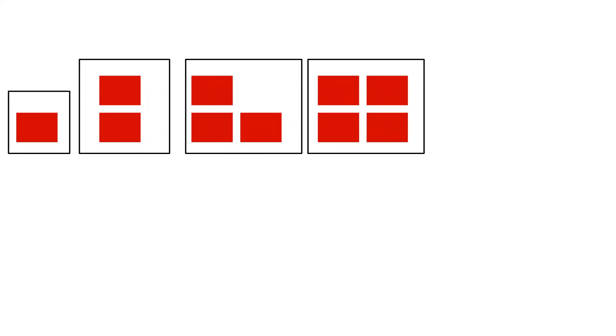So what is happening in this pattern? It is increasing by one. As we move ahead, it is increasing by one rectangle. So can you guess what will be next? Last we had four, so next it will be five. It will be five rectangles. Like this, we can guess what will come in these patterns.